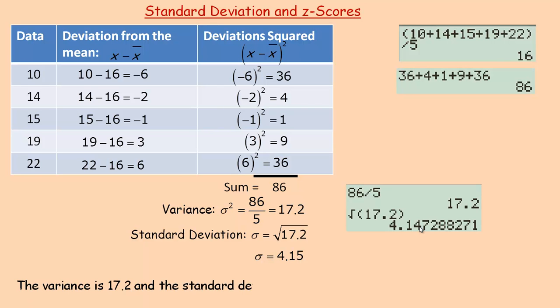The standard deviation is used as a measure of spread a lot more than the variance, because the standard deviation would be in the same units as your data. So for example, if these were centimeters, then the standard deviation would be 4.15 centimeters. The variance would actually be centimeters squared, because it's the square of the standard deviation. So variance is kind of an intermediate step to get to the standard deviation.